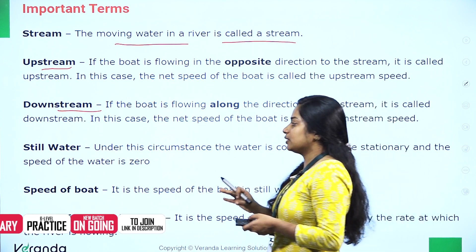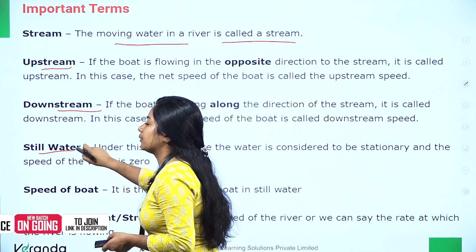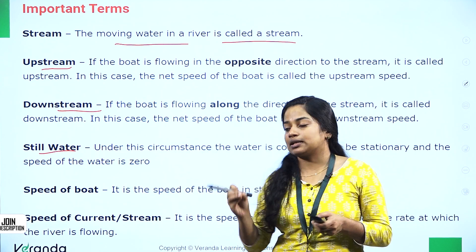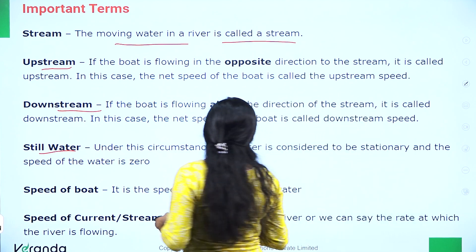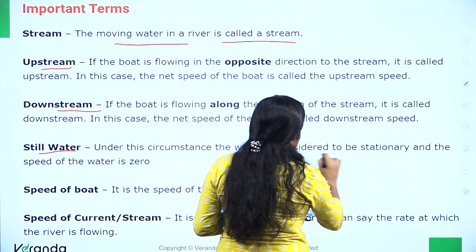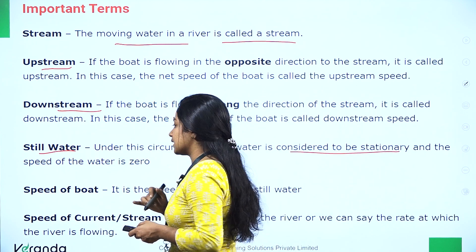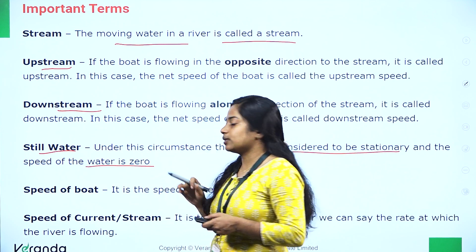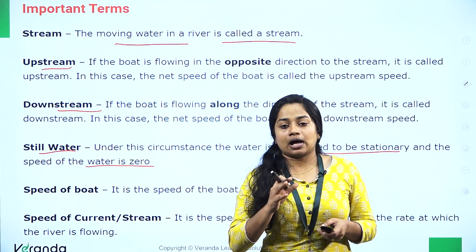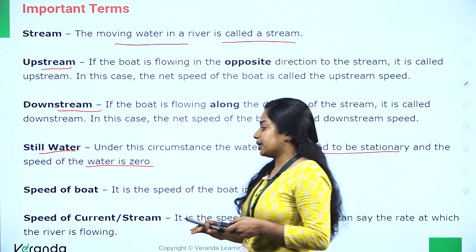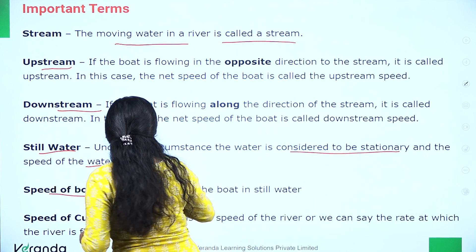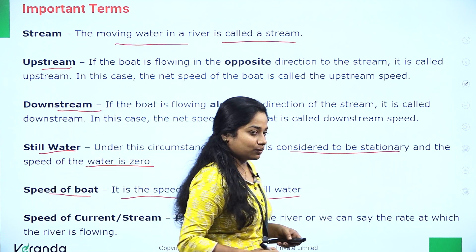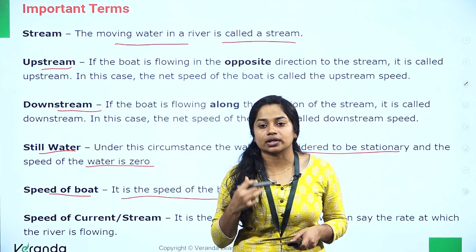Still water is water that is not moving. In this case, we will be stationary — like a pond. The speed of the current will be zero in still water. Still water means the speed of the boat in still water.